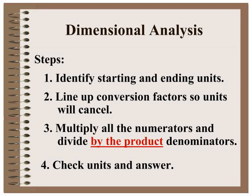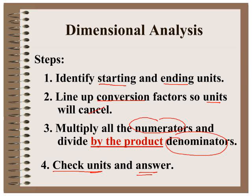Your steps will remain the same for these metric unit problems. You're going to identify your starting and ending units. You're going to set up your conversion factors so that your units will cancel. You're going to multiply all your numerators and divide by the product of your denominators, and then you're going to check those final units and that final answer.